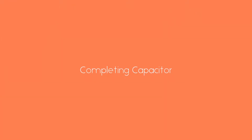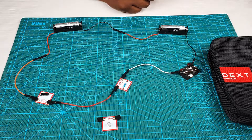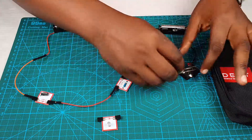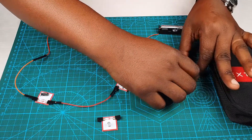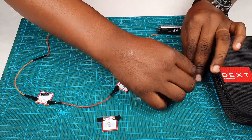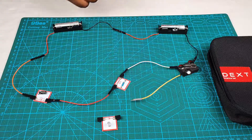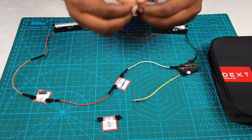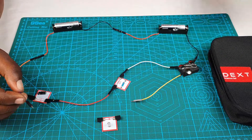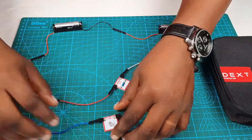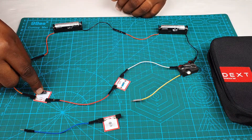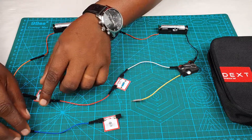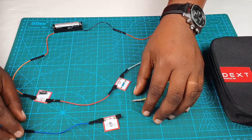Welcome to another tutorial. We're going to be continuing the capacitor circuit from our former tutorial. We're going to put our LED into our circuit. Connect another male-to-male wire to the free thumbtack on our switch — make sure it's nice and tight — then connect to your LED. Note we are going to be connecting our LED to a capacitor.